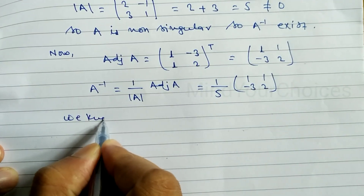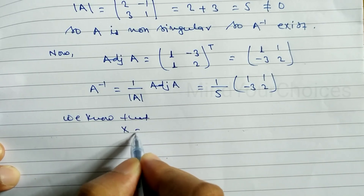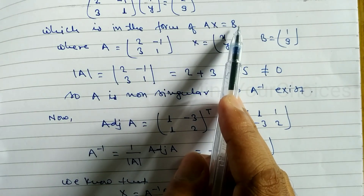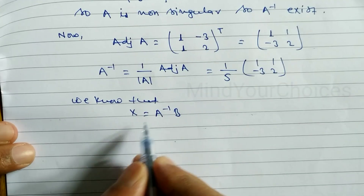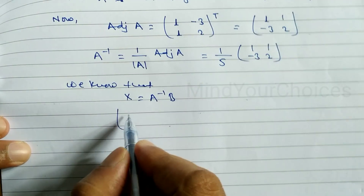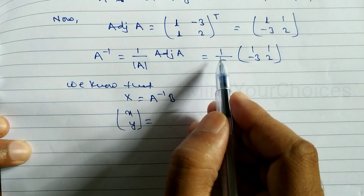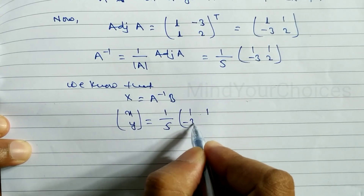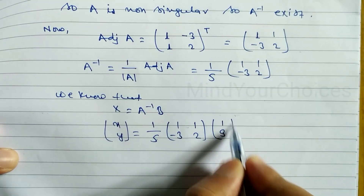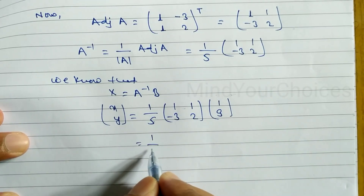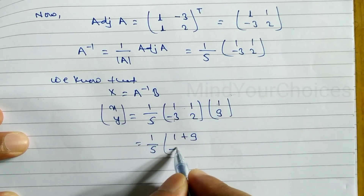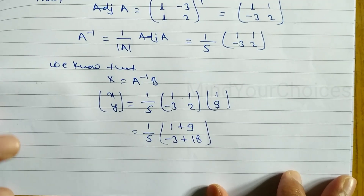We know that X equals A inverse times B. We wrote AX = B, so when we take A to the right side it becomes A inverse. Therefore [x; y] equals A inverse times B, which is (1/5) × [1, 1; -3, 2] multiplied by [1; 9]. Multiplying: 1×1 = 1, 1×9 = 9, so the first entry is 1+9 = 10. Then -3×1 = -3, 2×9 = 18.